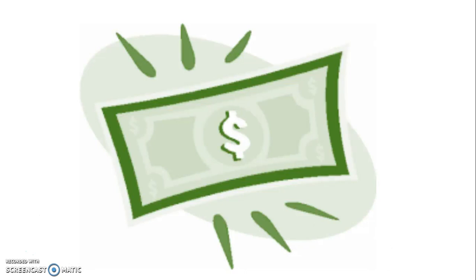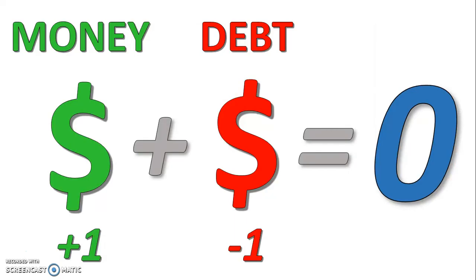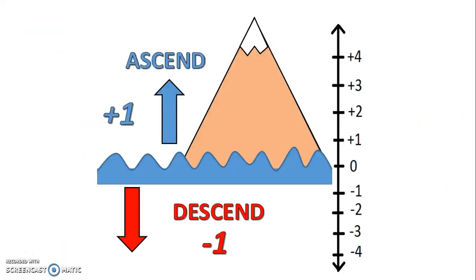Because if you somehow acquired a dollar, you don't get to keep it or spend it on something you want — you have to use it to pay off your debt. So a positive one and a negative one combine to make zero. Another popular real world example is sea level. Going up a mountain is a positive number, and if you go back down, that's negative.